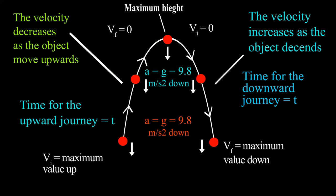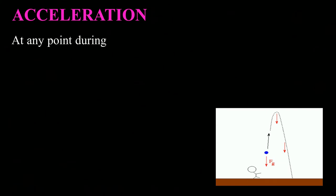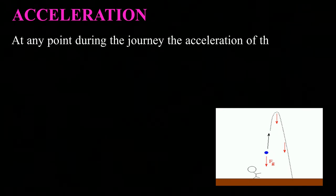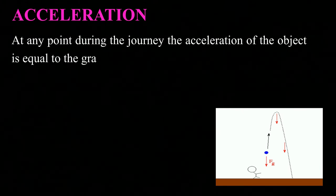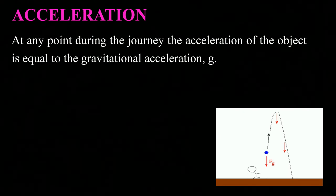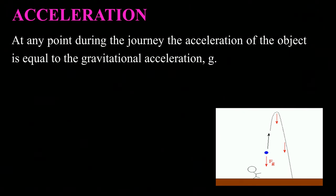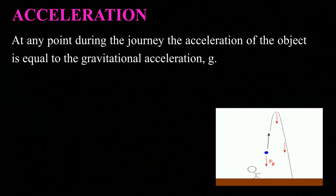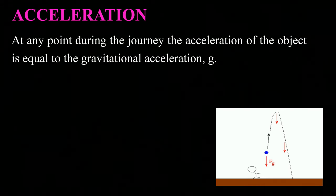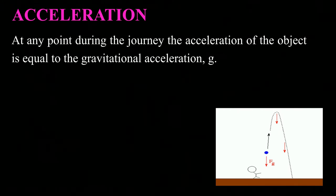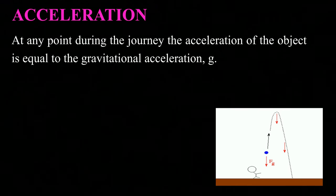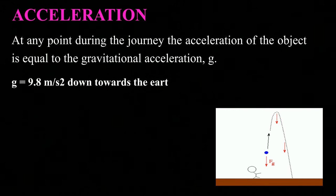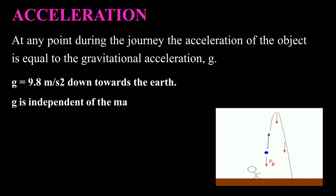Let's look at acceleration itself. At any point during the journey, the acceleration of the object equals the gravitational acceleration. When we speak of gravitational acceleration we are talking about vertical motion, where the force of gravity acts on the object. We use the symbol a, also written as g, with a value of 9.8 meters per second squared downwards. G is independent of mass.